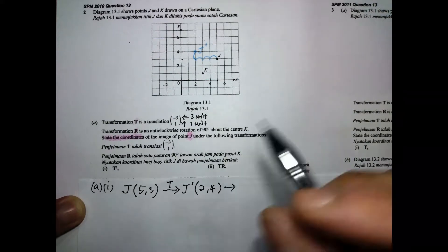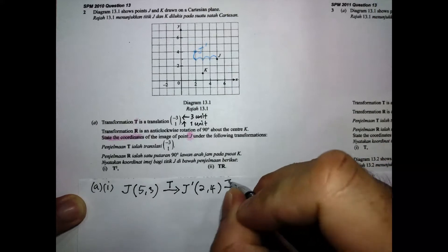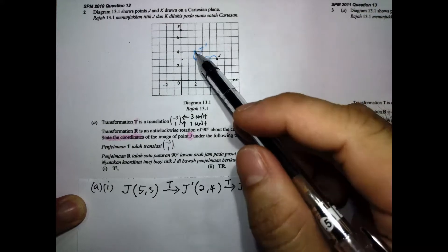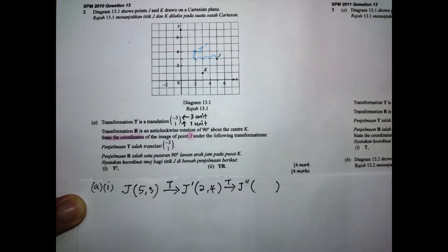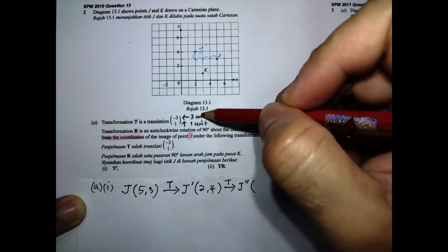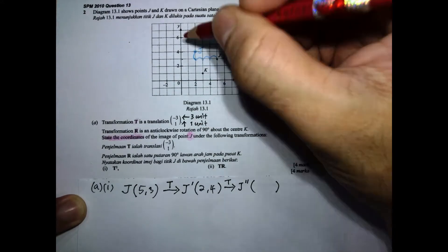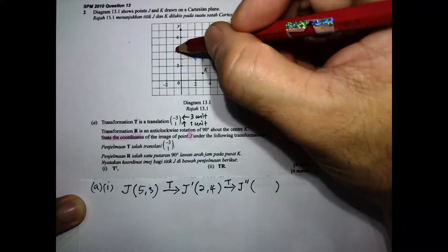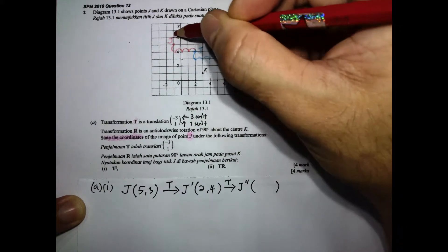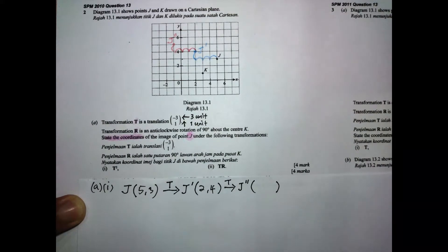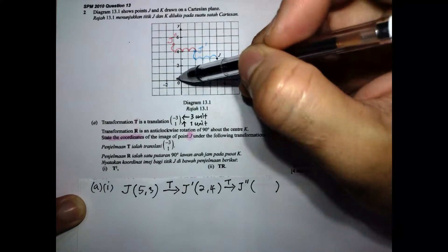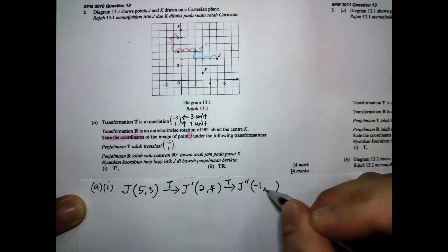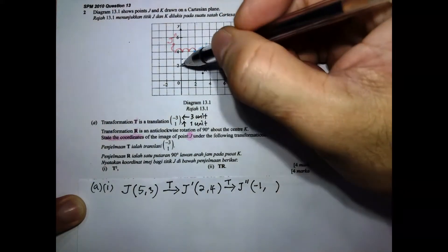We continue for the second transformation because T squared means we do the translation two times. From the first image at two, four, we do the same thing: three units to the left — one, two, three — and one unit going up. So the second image of J has coordinates negative one, five.